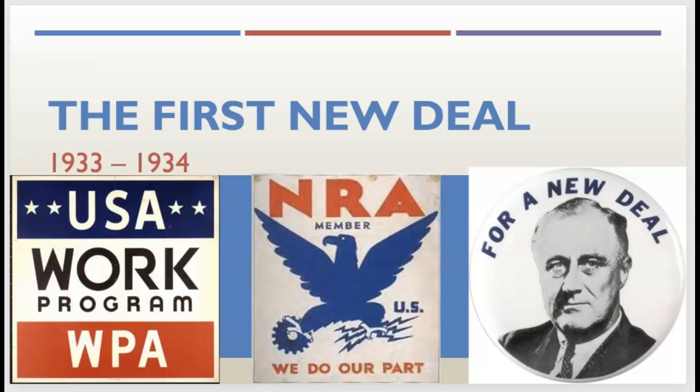The New Deal is split into two different deals. You have the first New Deal, which really exists between 1933 and 1934, and this is kind of FDR's honeymoon period of getting into office and trying to fix things. FDR is elected in November of 1932, but under the Constitution he does not take office until March 4th of 1933. This lag results in a constitutional amendment changing inauguration to January, which is why our current presidents are inaugurated in January.